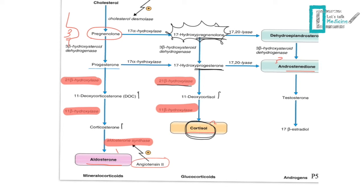This point about intermediate function is clinically important. When identifying enzyme deficiencies, knowing whether intermediates can partially compensate helps determine which enzyme is deficient. For example, if a patient has no aldosterone activity at all, with no intermediate compensation, this suggests 21-hydroxylase deficiency — these patients present dramatically with severe hypotension. However, if the presentation is less severe or delayed, it may be 11-beta-hydroxylase deficiency, because 11-deoxycorticosterone can partially compensate for missing aldosterone.